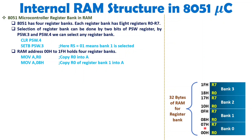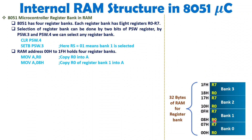When you write a program, you first need to select the bank. By default it will be Bank 0. If the programmer wants to use any other bank, two bits — PSW.3 and PSW.4, which are the RS bits of the flag register — are used to select any register bank. For example, writing CLR PSW.4 clears that bit to 0, and writing SETB PSW.3 sets that bit, making RS = 01, which selects Bank 1.